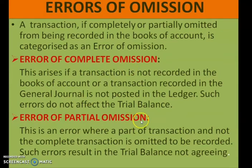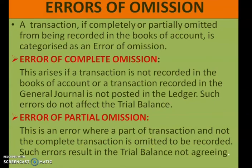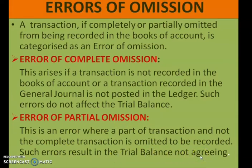Error of partial omission is an error where a part of a transaction, and not the complete transaction, is omitted to be recorded. Sometimes we may have recorded the debit aspect but forgotten to record the credit aspect — that is a partial omission. One part of the transaction is recorded and the other part is not recorded. Such errors result in the trial balance not agreeing — debit side will not be equal to credit side.